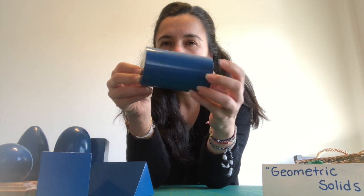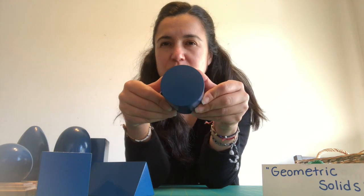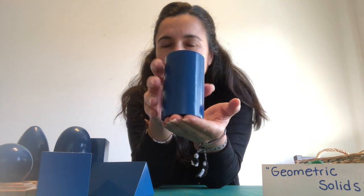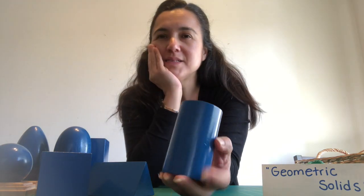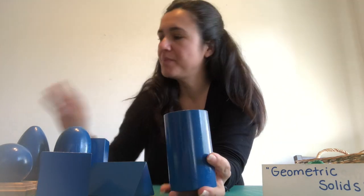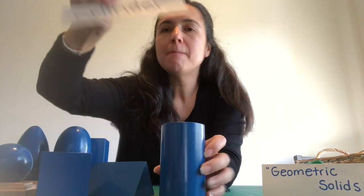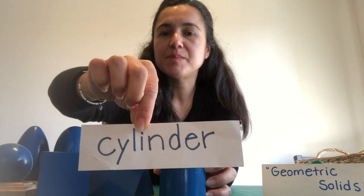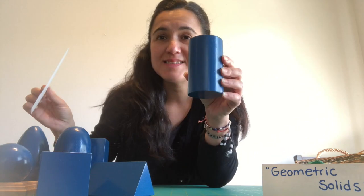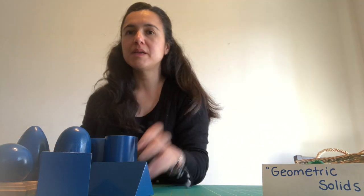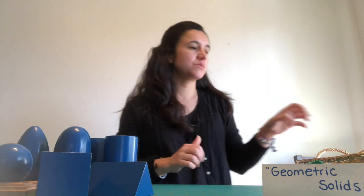And on the sides it has circles. And it looks like a can, like a soda can. It's called cylinder. That's a cylinder. And I'm going to leave the cylinder right there.